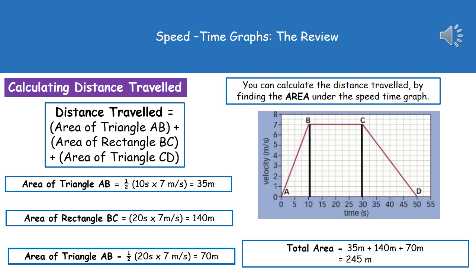We'll do the same for rectangle BC. So this time it's going from 10 to 30, so that's a 20-second difference, and again, 7 meters per second. So 20 times 7 gives us 140 meters.